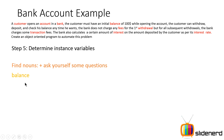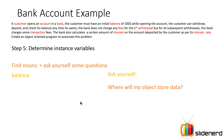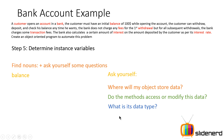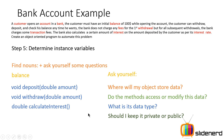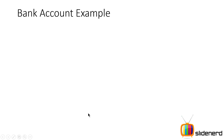Next, find the instance variables. Ask yourself: where will your object store data? For the Account class, what data will it store? Do the methods access or modify this data? What's the data type — in our case a double or float since we're dealing with money that can include cents. Should it be private or public? Since this is money, it must be private — otherwise someone could modify it from outside without permission. So we secure it and provide access only through the defined methods.